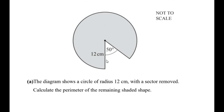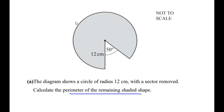The diagram shows a circle of radius 12 centimeters with a sector removed. We need to calculate the perimeter of the remaining shaded shape. We can see that a circle is given, out of which a small part is removed, dividing the circle into two sectors — a minor sector and a major sector.